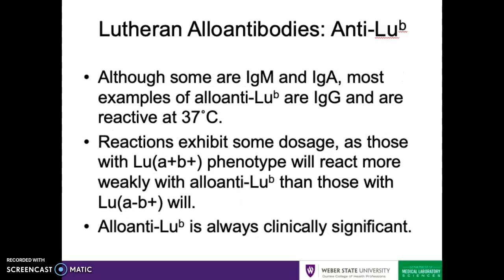With regard to anti-Lutheran B, although some of the first examples of this alloantibody were IgM and IgA, most examples of anti-Lutheran B are going to be IgG and reactive at 37 degrees Celsius. Because of this, anti-Lutheran B is always clinically significant. There is some interesting dosage effect with anti-Lutheran B, as Lutheran A and B positive individuals are going to have a weaker reaction with the alloantibody than individuals who are only Lutheran B positive.